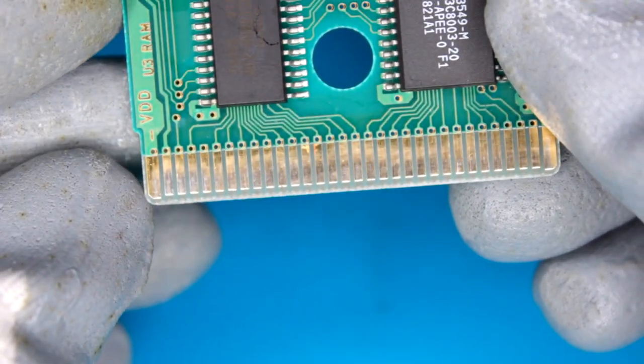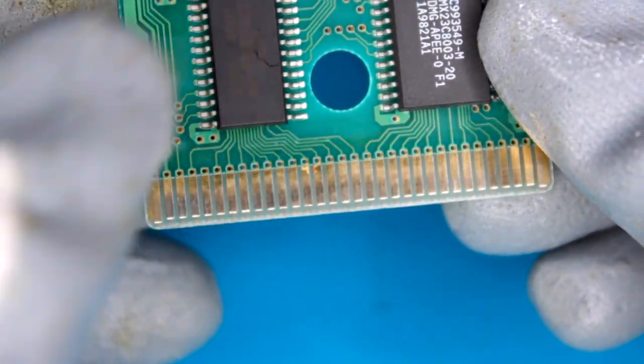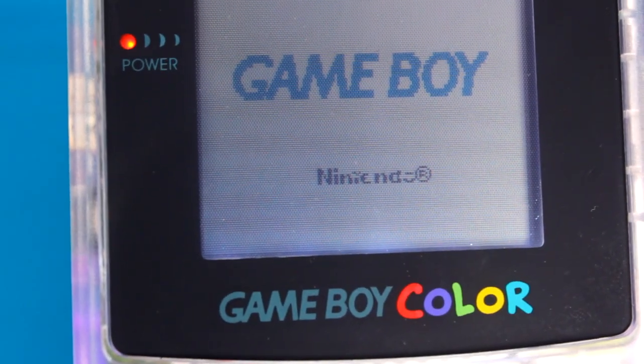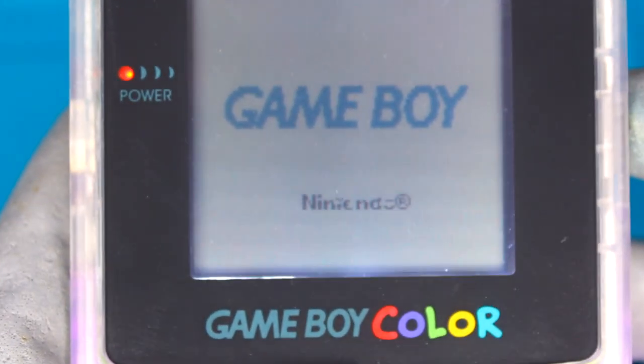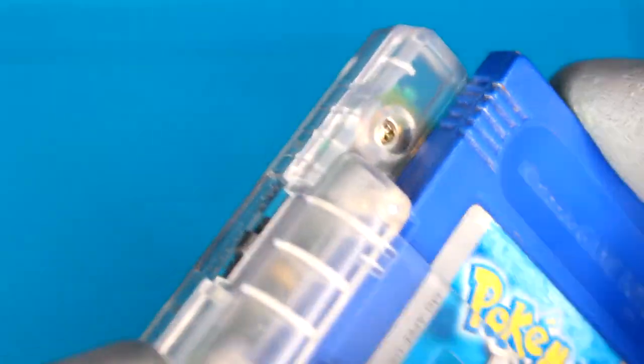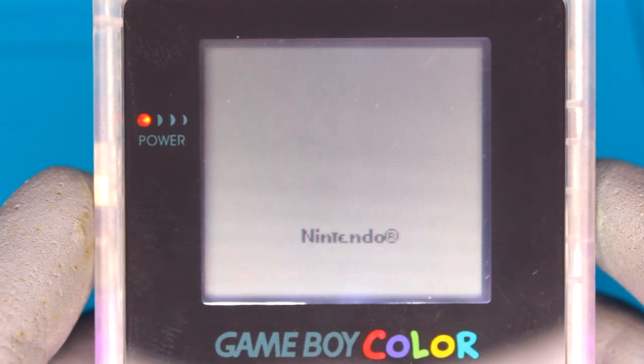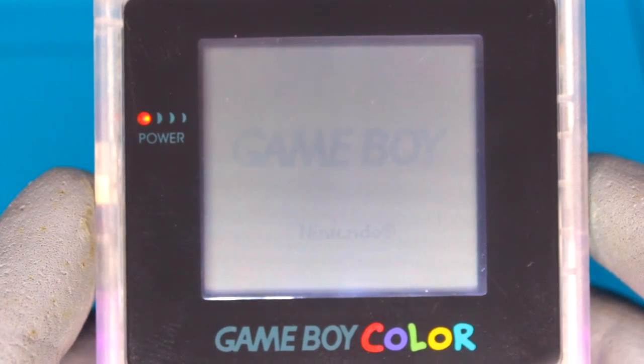So let's put it back into its case and test to see if it's got the same issue. Now it's in a slightly different area. It looks a bit more corrupted than before. Let's give it the old reinsert. And we still seem to have the same issue. So cleaning the contacts didn't help.